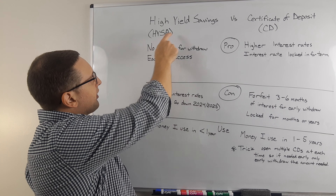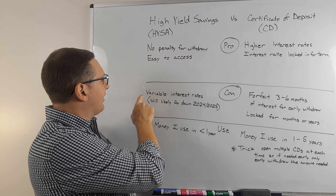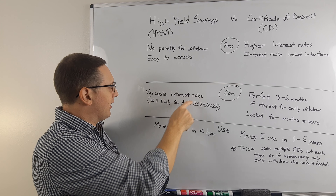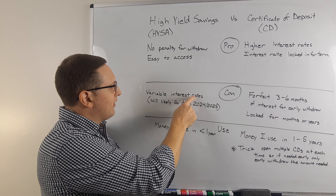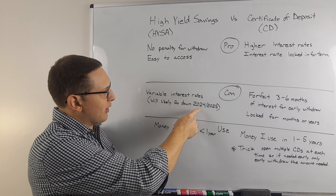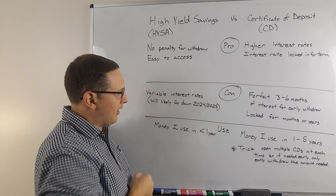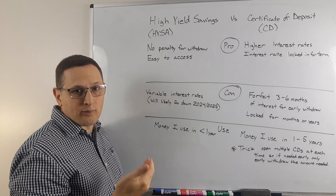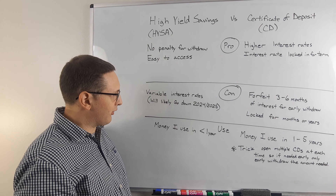What's the con of having a high-yield savings account? Well, it has variable interest rates, so this is going to continue to go down as we go through this time period because the Fed is reducing interest rates.